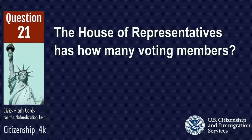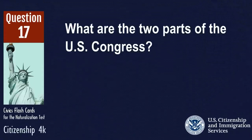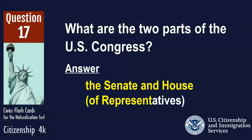The House of Representatives has how many voting members? 435. What are two parts of the U.S. Congress? The Senate and House of Representatives.